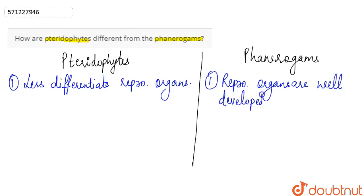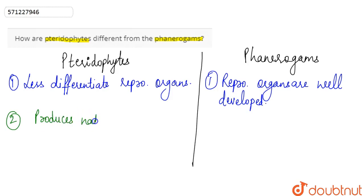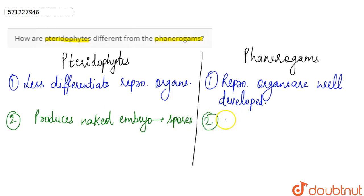The next difference between pteridophytes and phanerogams is that pteridophytes produce naked embryos, which are called spores. But in the case of phanerogams, they are plants that produce seeds.